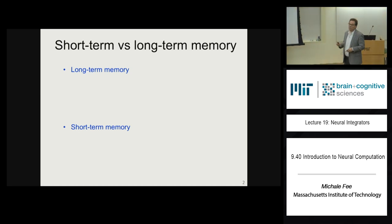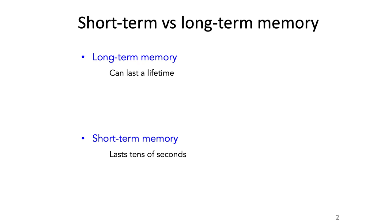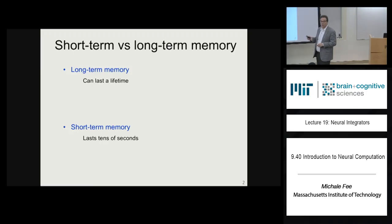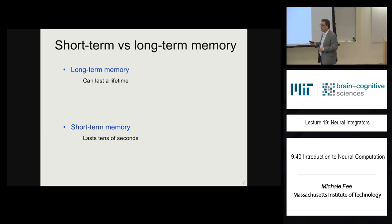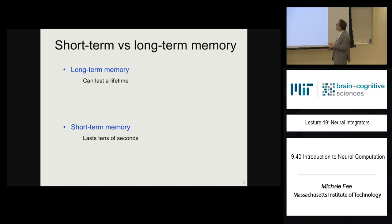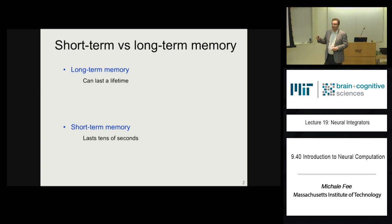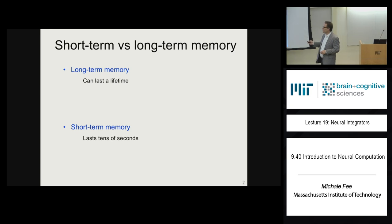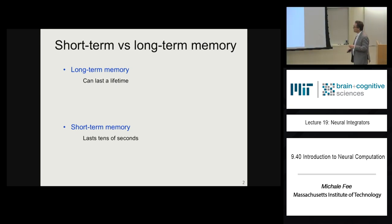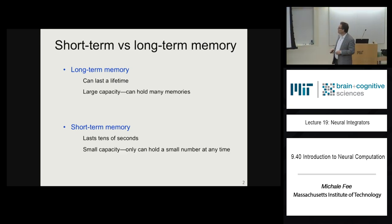Let me say a few words about what short-term memory is by contrasting it with long-term memory. Short-term memory is memory that lasts a short period of time, on the order of seconds to maybe a few tens of seconds at most, whereas long-term memories are on the order of hours, days, or even up to an entire lifetime of the animal.